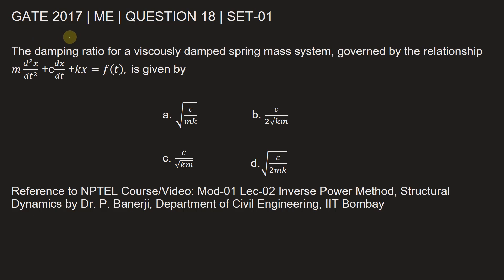This question is from GATE 2017 Mechanical Engineering paper, Set 1, Question Number 18. The damping ratio of a viscously damped spring-mass system governed by the relationship m(d²x/dt²) + c(dx/dt) + kx = f(t) is given by—among these four options, we have to identify what gives the damping ratio of this viscously damped spring-mass system.